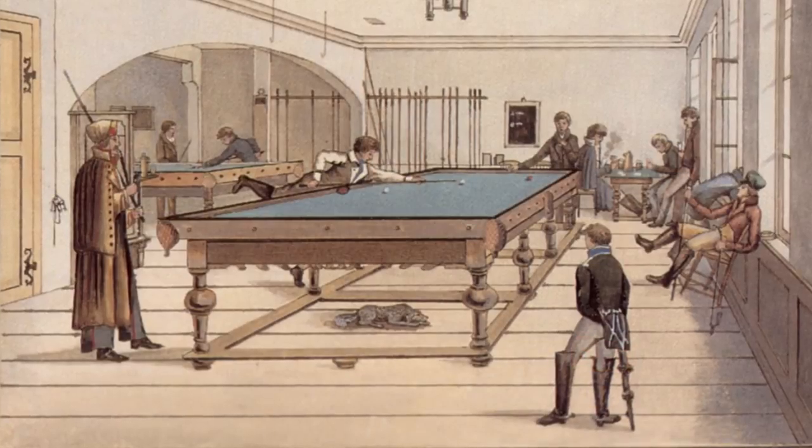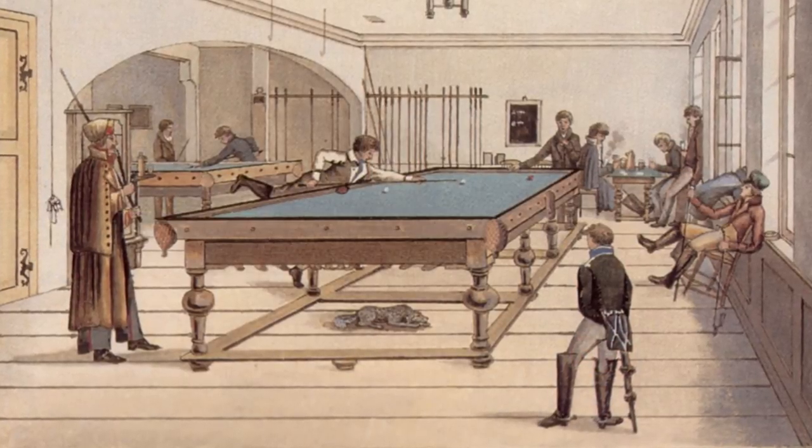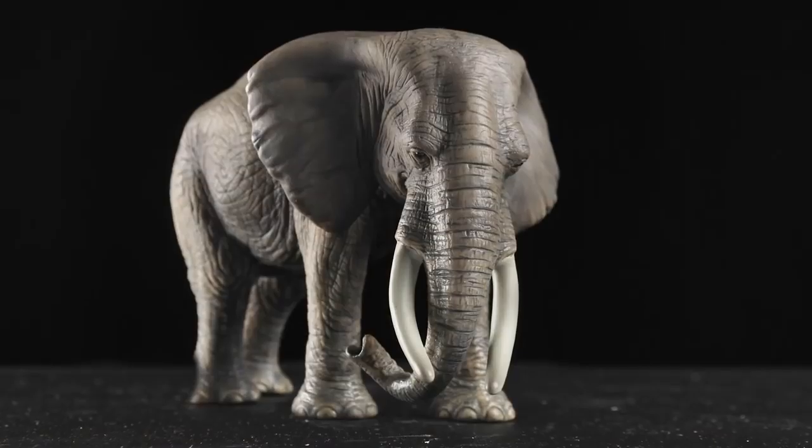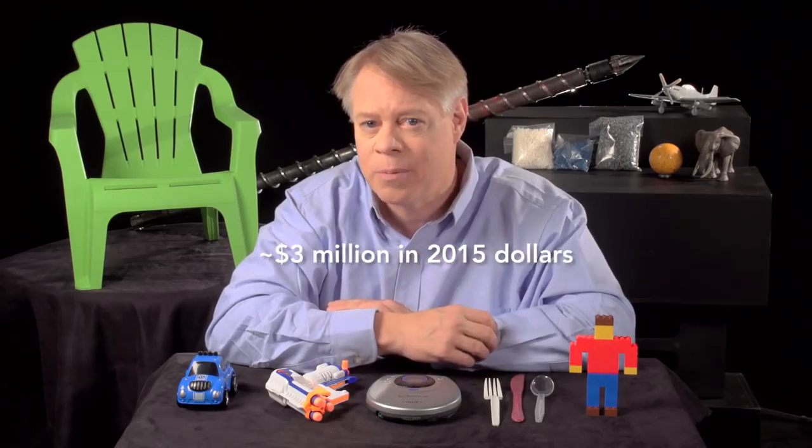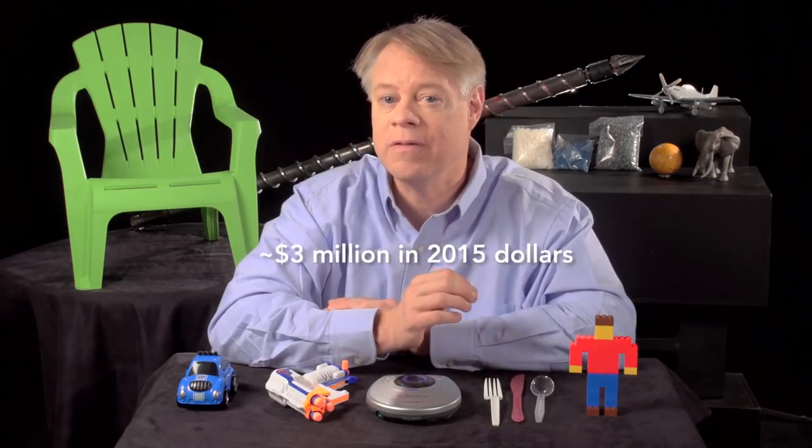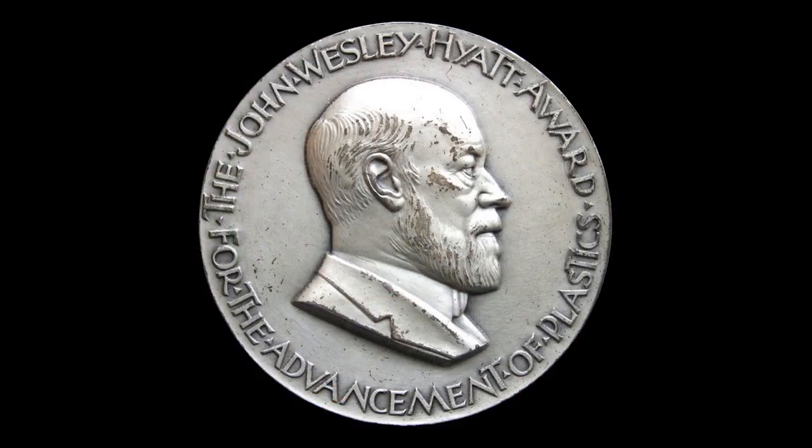Injection molding was invented to solve a problem for billiards. In the 19th century, billiard balls were composed of ivory harvested from the tusks of African elephants. This devastated the elephant population, so a billiards manufacturer offered a $10,000 prize for a replacement for ivory. This spurred John Wesley Hyatt to develop one of the first plastics, celluloid, to create billiard balls.